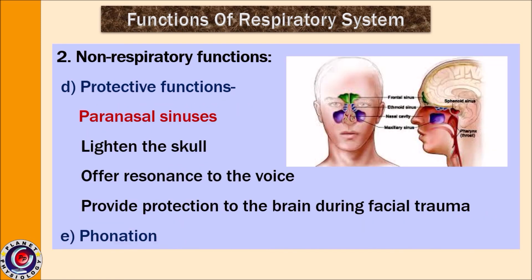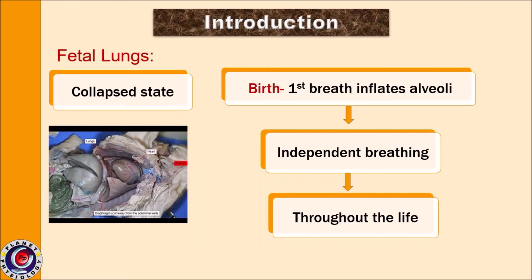Paranasal sinuses make the skull lighter, which is important so that the neck can support the weight of the head and brain. They are also responsible for offering resonance to the voice and protecting the brain from facial trauma. Finally, the respiratory system plays an important role in phonation. All these functions are seen after the baby is born, as fetal lungs are in a collapsed state. As the baby is born and cries, air is forced into the alveoli — this is the first breath of the baby — and from this first breath onwards, independent breathing continues throughout life.